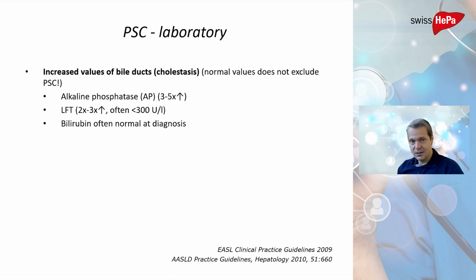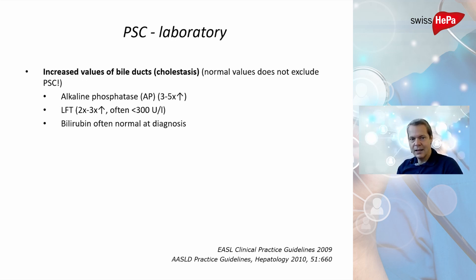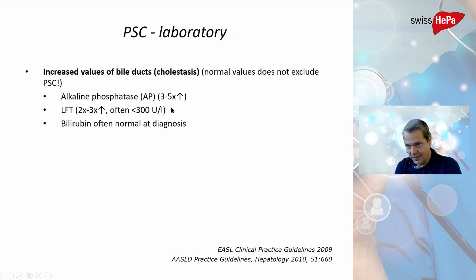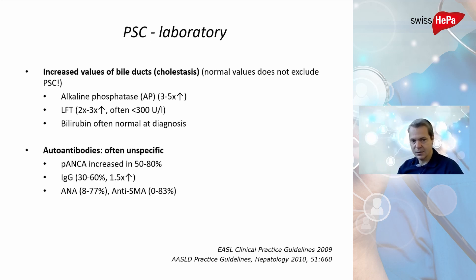For laboratory parameters, you can look at both bile duct parameters and liver parameters, which can be increased. If bile duct parameters are increased, this is called cholestasis. One such parameter is alkaline phosphatase, which usually shows a three to five times upper limit of normal. Liver function tests are also increased. Bilirubin may not be elevated at diagnosis but can increase over the disease course. Specific autoantibodies such as P-ANCA, IgG, and ANA can be elevated but not always.